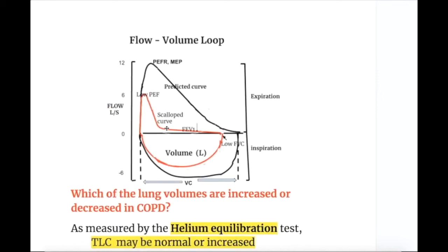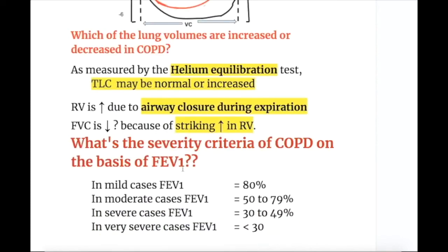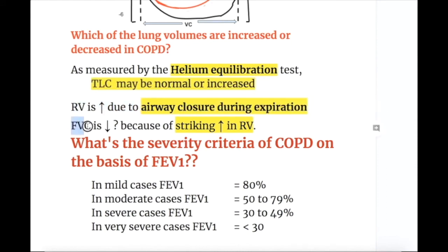In severe obstructive disorder, peak expiratory flow rate is reduced and there is low FVC, with reduced FEV1. In COPD as measured by the helium equilibration test, TLC may be normal or increased; residual volume is increased due to airway closure during expiration, and FVC is decreased because of the striking increase in residual volume — which is the air that cannot be expelled from the lung by any means.